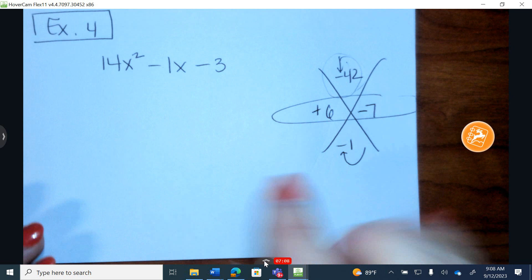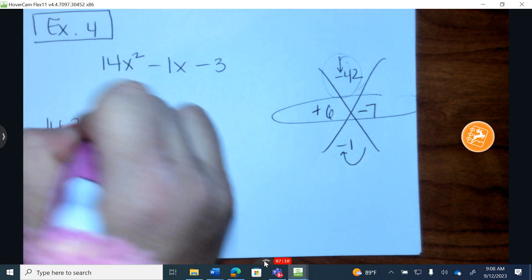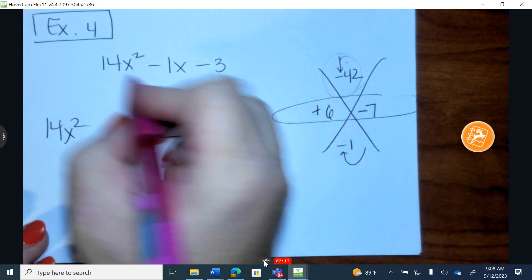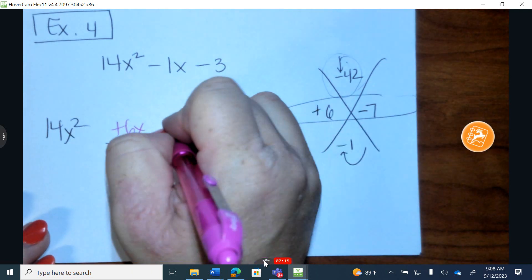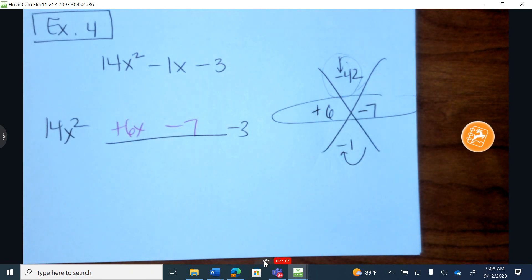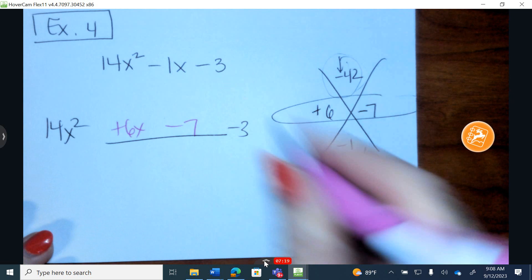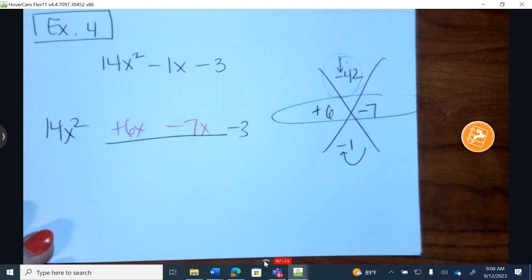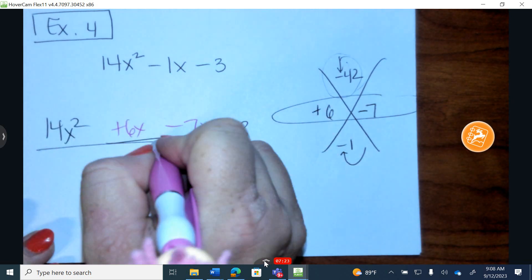Multiply and combine. So I write down the problem and I have plus 6x and minus 7. And what did I forget? I forgot an x. That does make a difference. So I underline the first two.